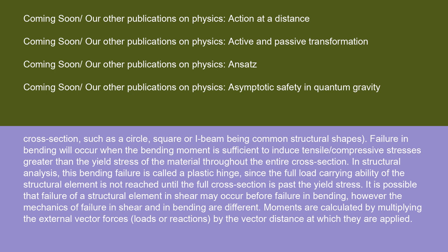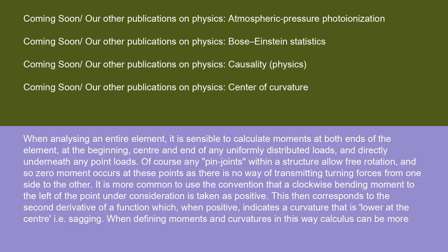Moments are calculated by multiplying the external vector forces, loads, or reactions by the vector distance at which they are applied. When analyzing an entire element, it is sensible to calculate moments at both ends of the element, at the beginning, center, and end of any uniformly distributed loads, and directly underneath any point loads. Of course, any pin joints within a structure allow free rotation, and so zero moment occurs at these points as there is no way of transmitting turning forces from one side to the other.